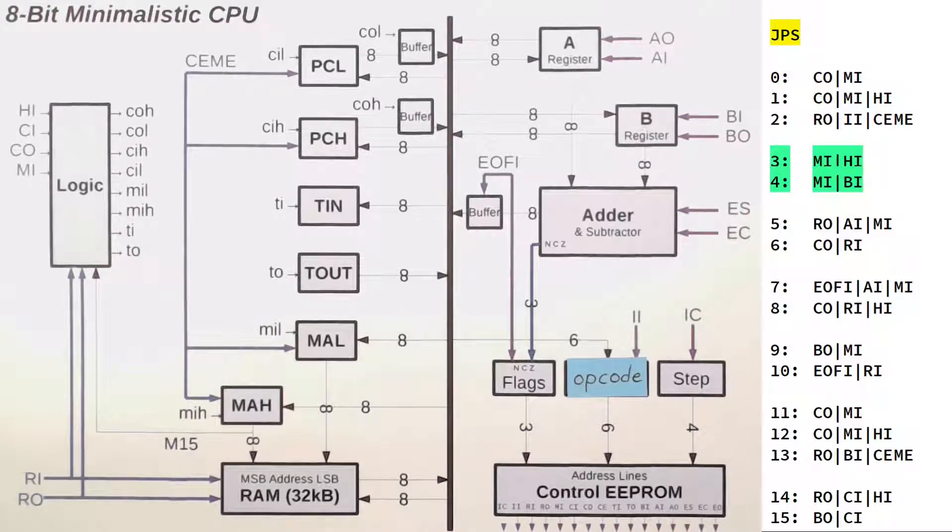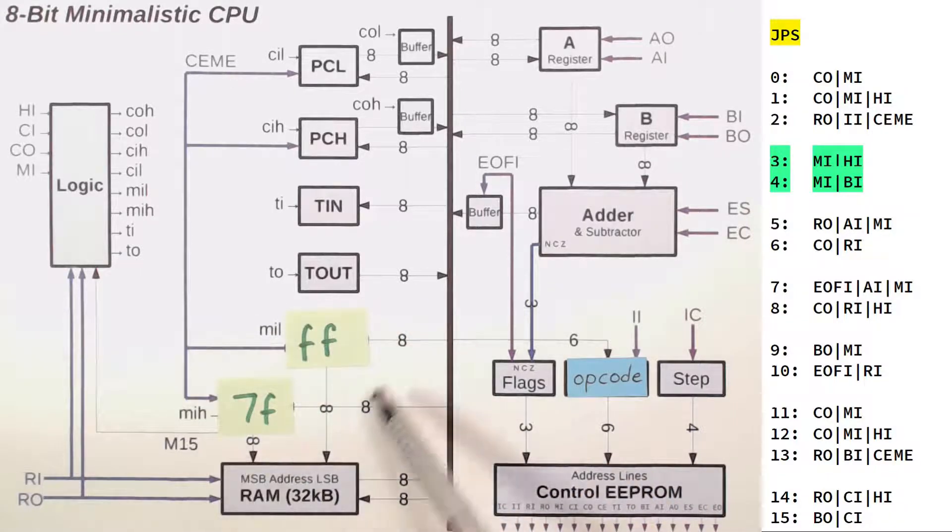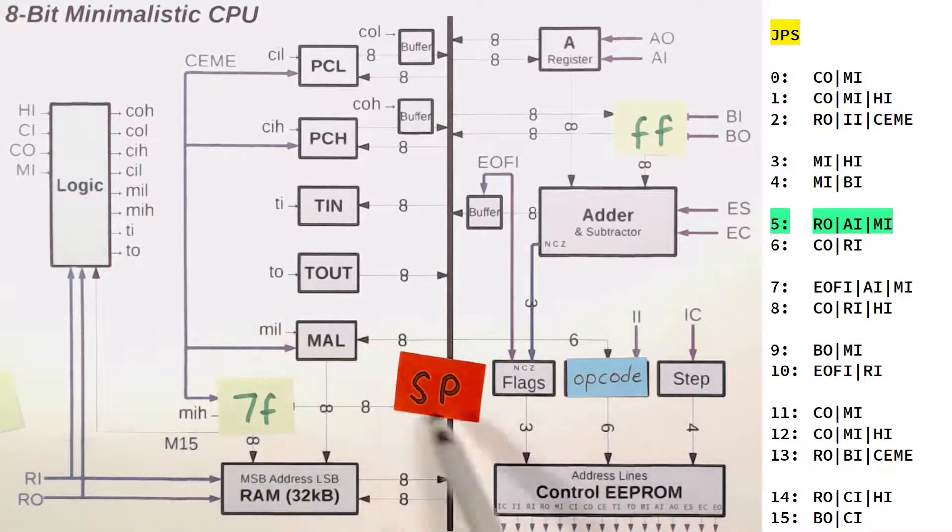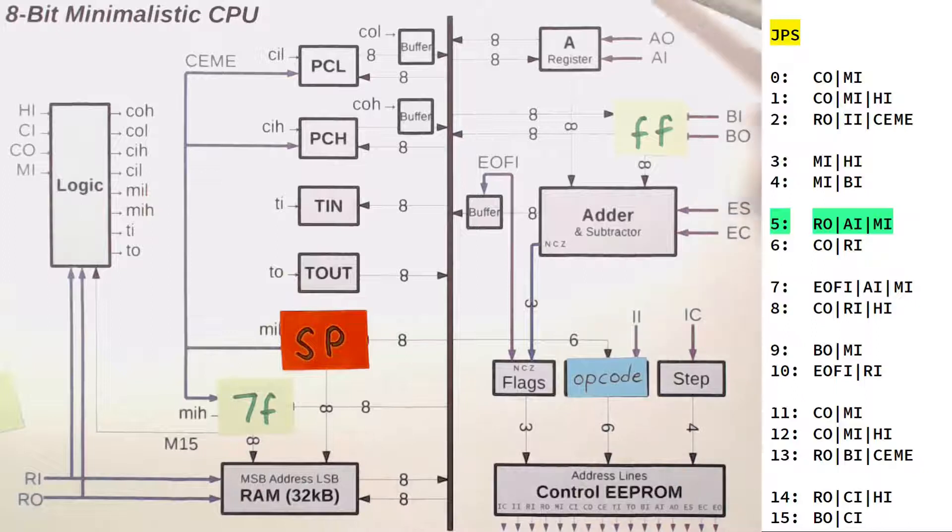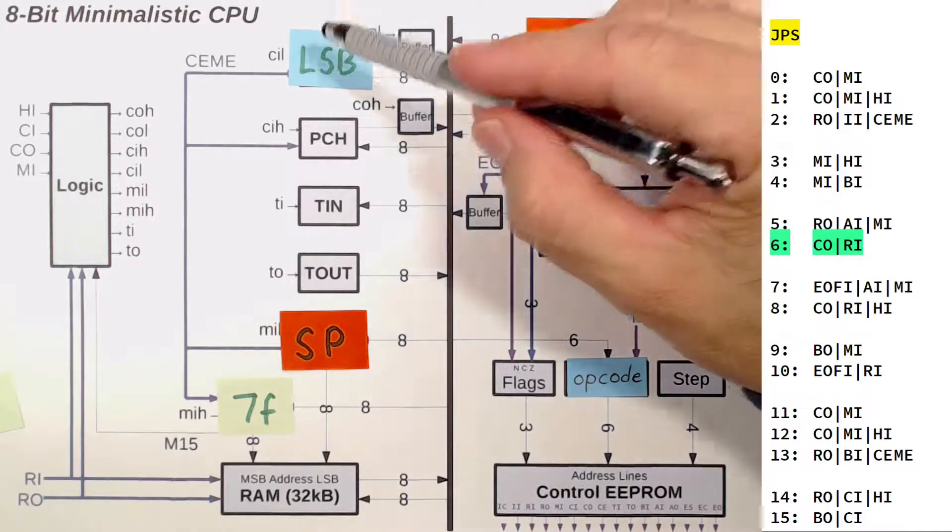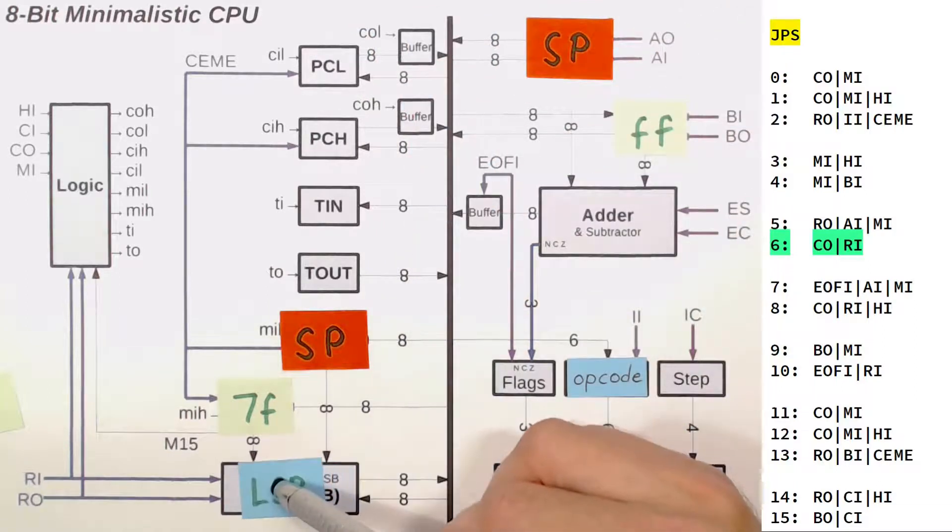And again, memory in HIGH and memory in BIN move the values 7F and FF into our memory address register and also into B, exposing the stack pointer. Now RAMOUT AIN memory in copies the stack pointer into our MAR and also into the A register. Now COUNTER OUT RAMIN pushes the LSB of our program counter onto the stack.